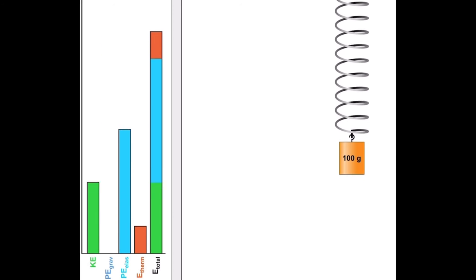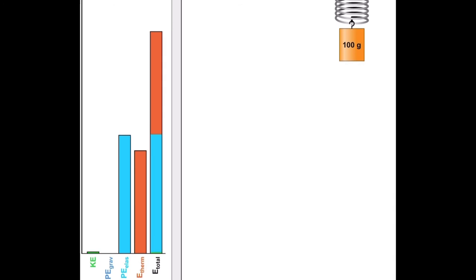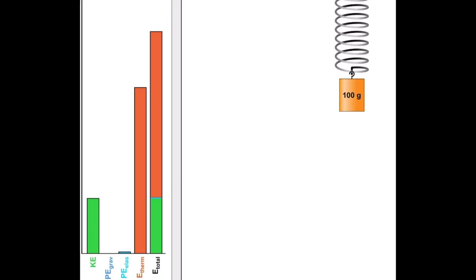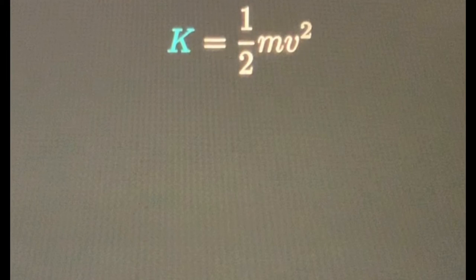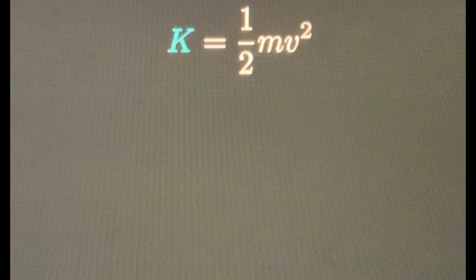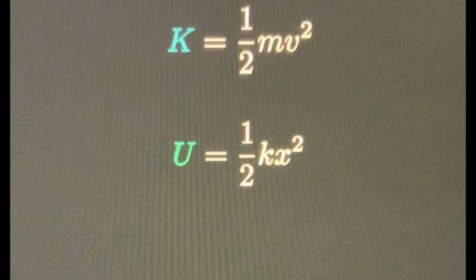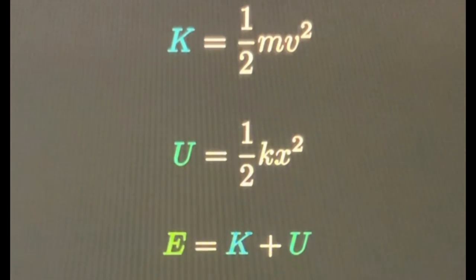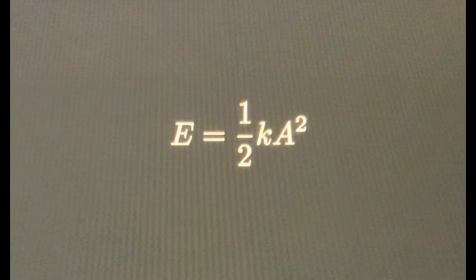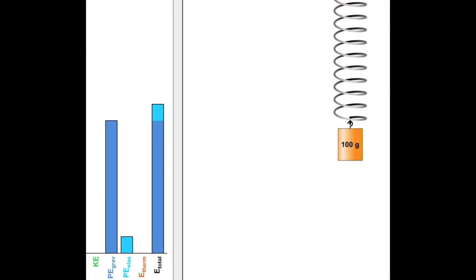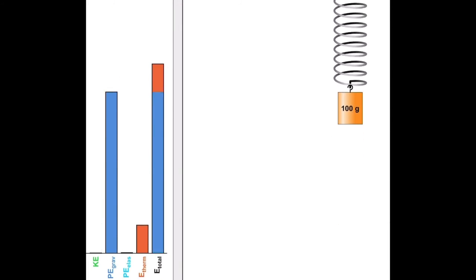A very important thing to note is that the total energy in the system always stays the same, because of the conservation of energy. Energy always has to go somewhere, but it can be transformed into other forms. Even if I add in damping, energy is still conserved. The kinetic energy K = ½mv², and the elastic potential energy U = ½kx². The total energy is just the sum of these two, which can also be written as E = ½kA², where A is the amplitude.